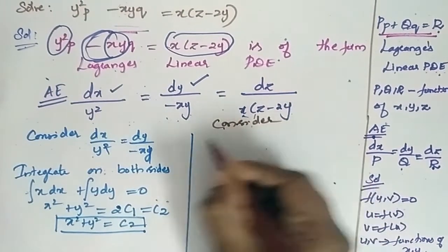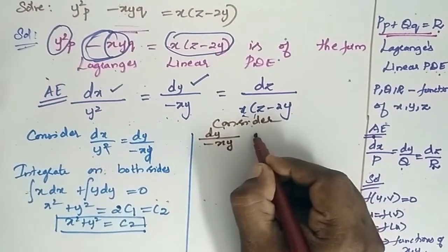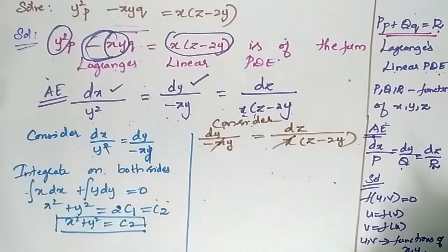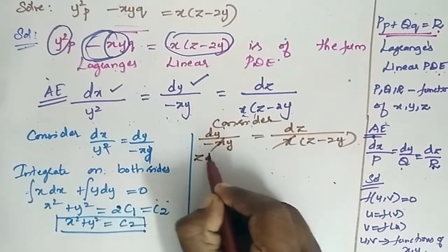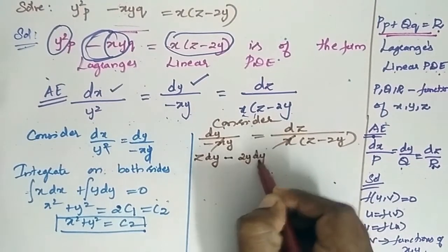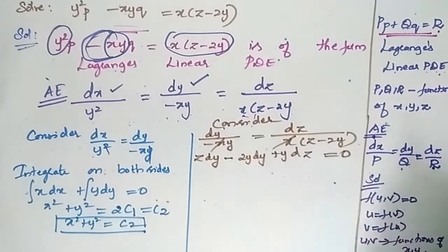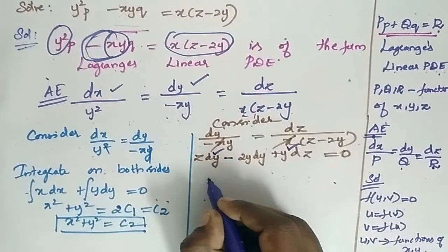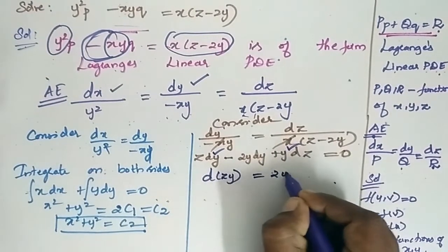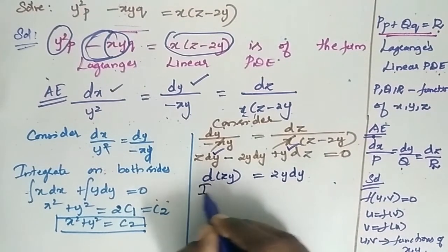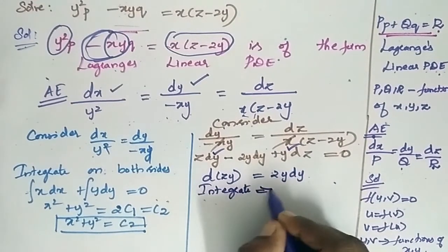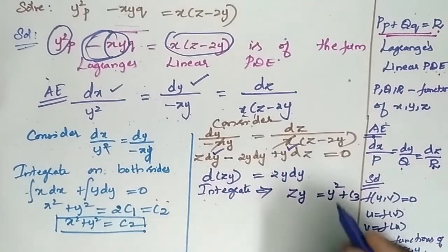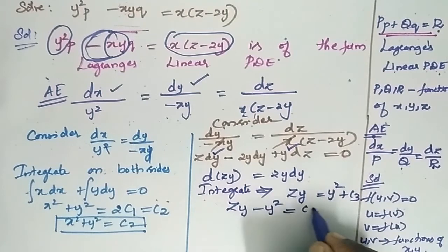Now consider dy/(-xy) = dz/x(z - 2y). Cancel x. Cross multiplying, I will get z dy - 2y dy + y dz = 0. Combining these two, d(zy) = 2y dy. Integrating, zy = y² + c₃, so zy - y² = c₃.